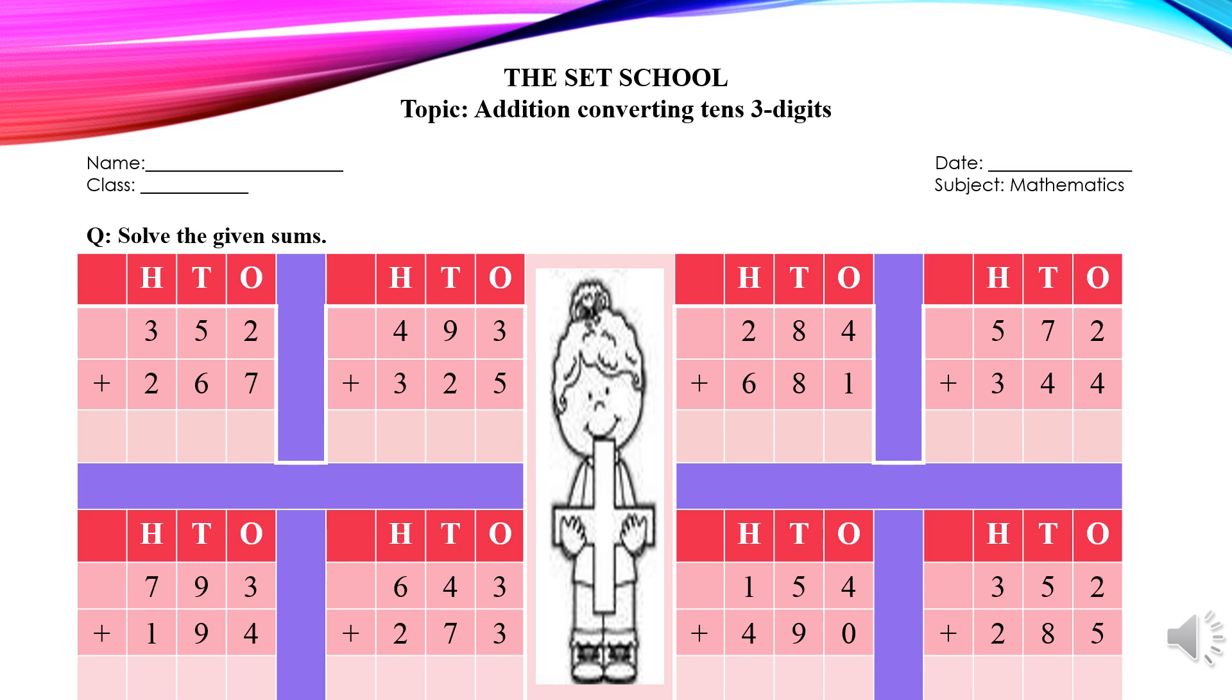It's time to do an activity. So we have a sheet of addition converting tens, three digits. In this sheet, few sums of addition converting tens are there. You have to copy down the sums of addition converting tens in your rough copies and have to solve it also. But while doing this homework, you have to remember two things that are very important: you have to do your work in good handwriting and you have to keep your copies safe. Best of luck.